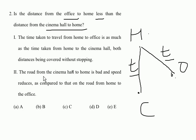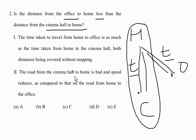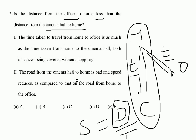Looking at statement two: the road from cinema hall to home is bad and speed is lower compared to the road from home to office. So speed from home to cinema is less. Using both statements together — if speed is less and time taken is the same, and distance equals speed times time, then distance to the cinema hall is less as well. Statement one alone is misleading and tries to get you to mark the wrong answer. Together, both statements are needed.